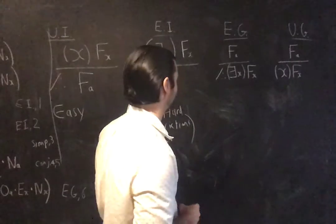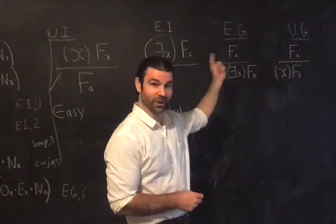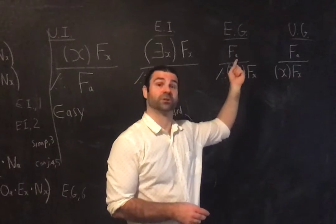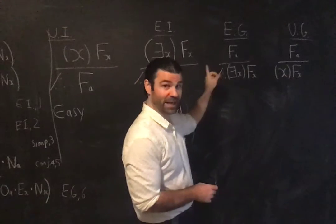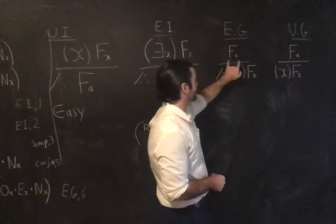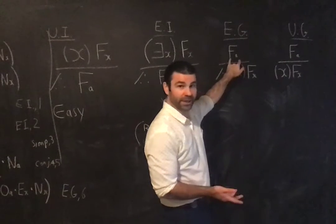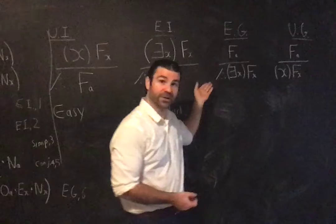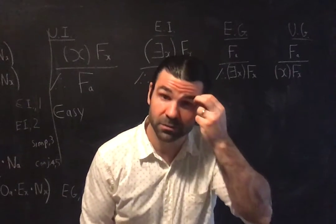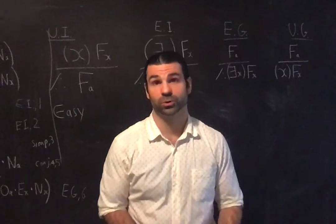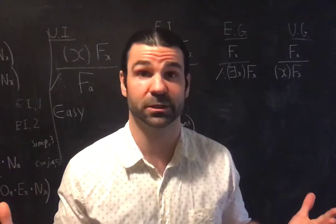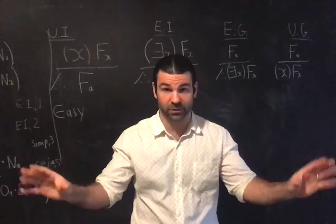Existential generalisation: the existential quantifier is involved, and it's generalisation, so I'm adding the existential quantifier. This rule allows me to go from this particular individual — A, Andrew — is F, to there exists some X such that X is F. Will this always be valid? Will this always be truth-preserving, or will it possibly lead me astray? No, this is clearly a universally valid rule.